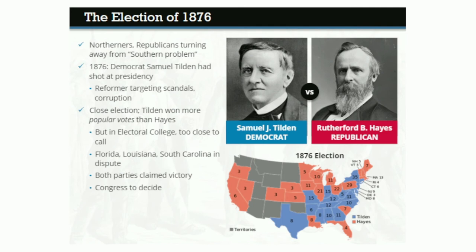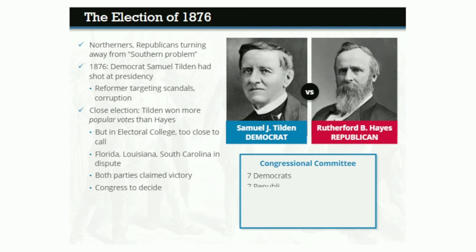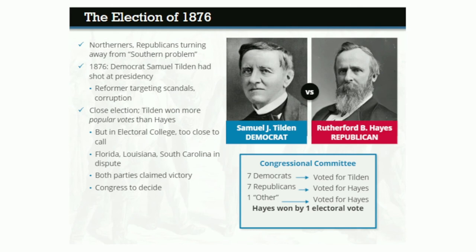Congress appointed a fifteen-man special commission composed of members of the House, Senate, and Supreme Court. It was split between seven Democrats, seven Republicans, and one man without a clear party preference. Predictably, all the Democrats voted for Tilden and all the Republicans voted for Hayes. The remaining member voted for Hayes as well, giving all the disputed electoral votes to the Republican, who was declared the winner by exactly one vote — 185 to 184.